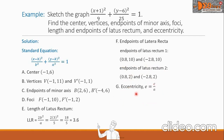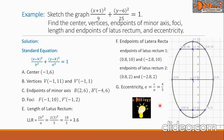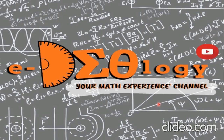The last item is the eccentricity, denoted by E, which equals c/a. Substituting the values gives 4/5. Here is the graph of our ellipse. This is our final answer. I hope you learned something from this video.